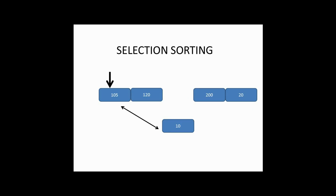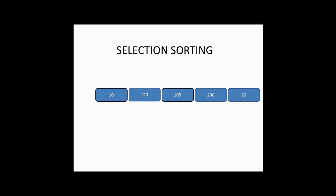So we swap that element with the first element of the array. The resultant array is shown here. You can see that 10 and 105 are swapped with each other.